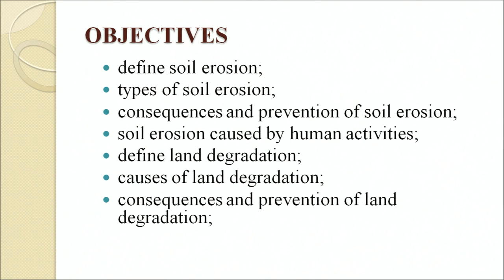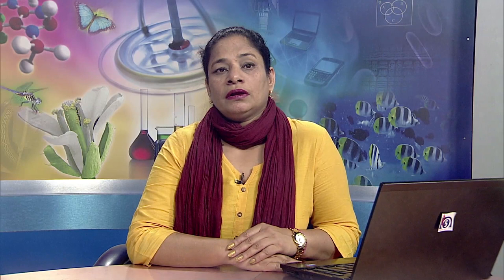Soil conservation is a set of management strategies for preventing soil erosion from the earth's surface or becoming chemically altered by overuse, salinization or other chemical soil contamination. Water and wind erosion are main causes of land degradation. Combined, they are responsible for 84 percent of global degraded land, making erosion one of the most significant environmental problems. Rapid increase in human population has placed a great strain on land and soil resources, resulting in land degradation and soil erosion.